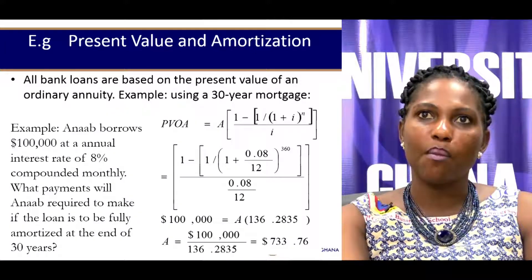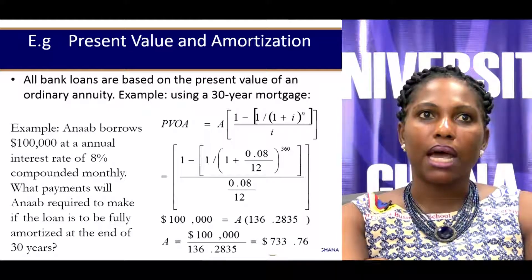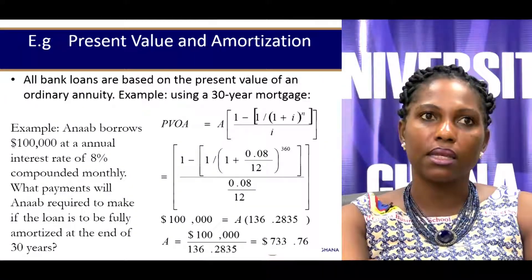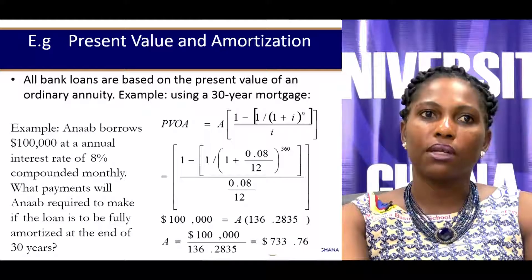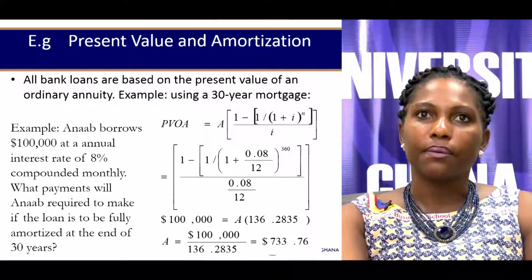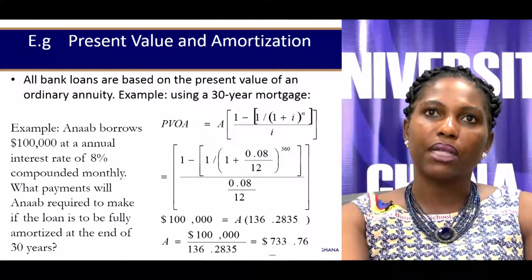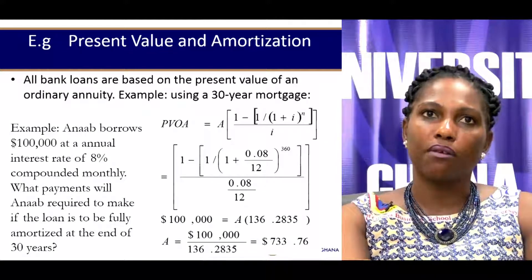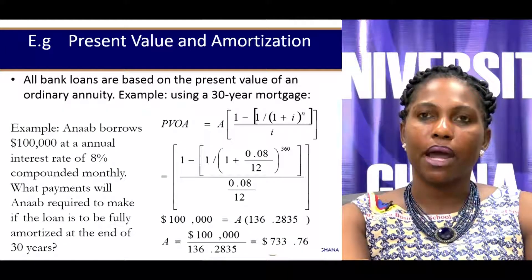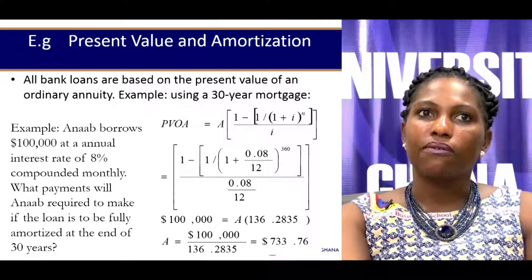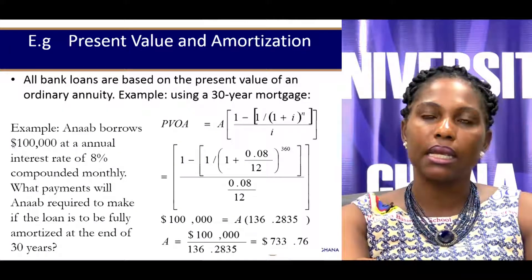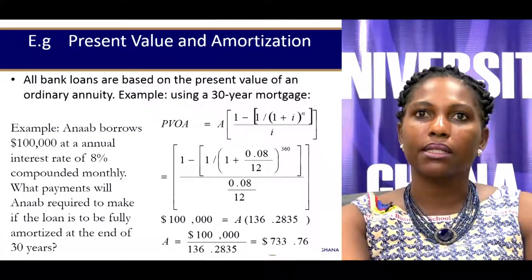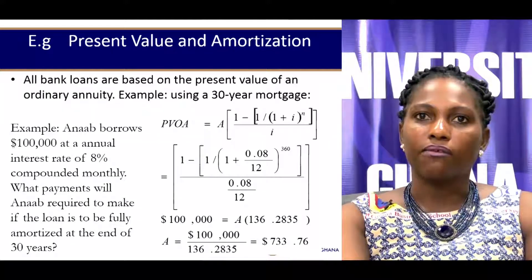For example, consider a 30-year mortgage where Anna borrows $100,000 at an annual interest rate of 8%, compounded monthly. We want to compute the required payments that will ensure the loan is fully amortized at the end of 30 years. The $100,000 taken is the present value of future payments Anna is expected to make. The 8% per annum divided by 12 months gives the monthly rate, and 30 years multiplied by 12 months gives 360 total periods — meaning Anna is expected to make 360 monthly payments.